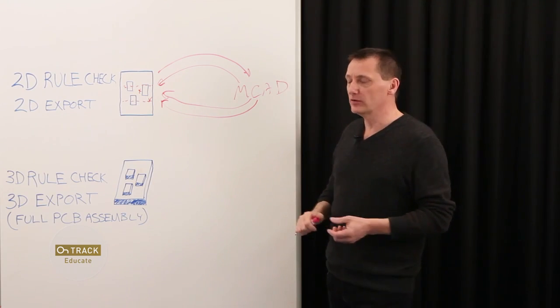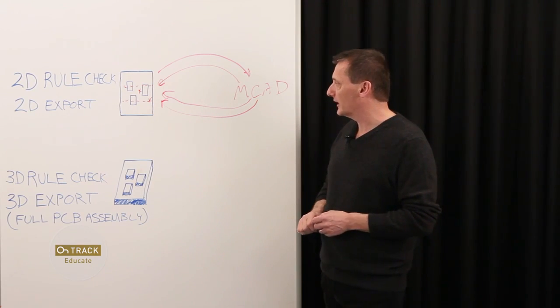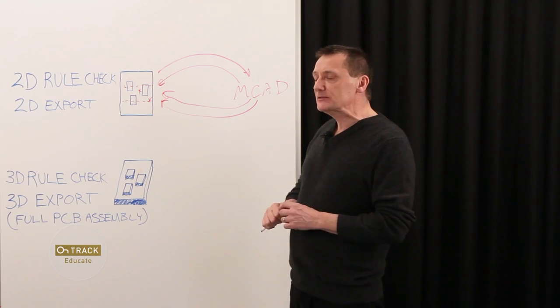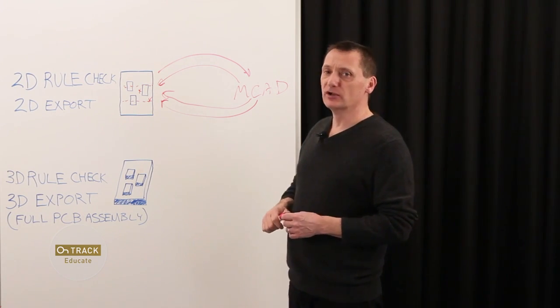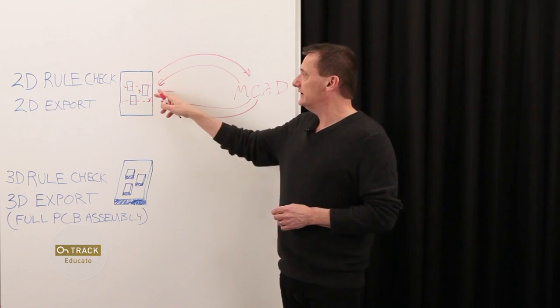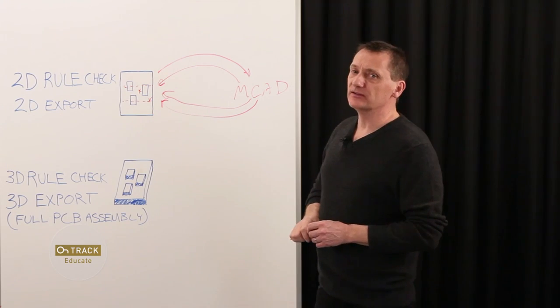It could be simple component placement interference and whatnot. That's not to say the mechanical team doesn't have other more important things to do, such as thermal flow and things like that. So, what if these routine placement issues could be discovered early?